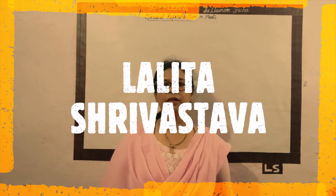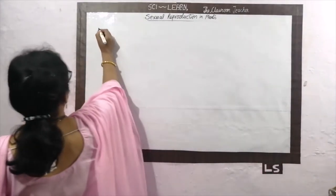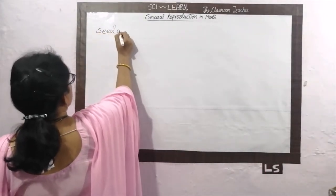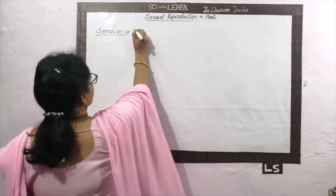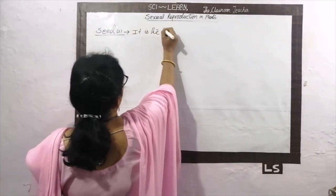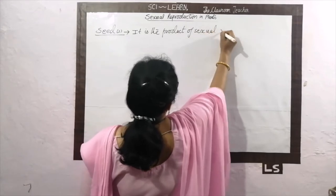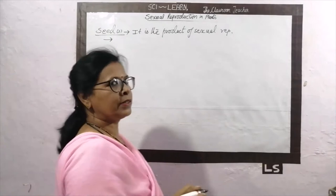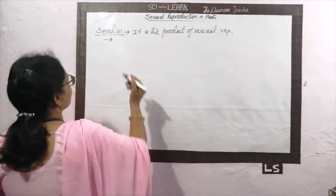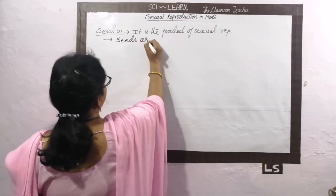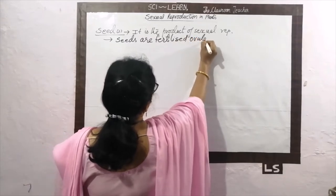Again, Class 12 Biology, the same lesson: sexual reproduction in flowering plants. Today we are going to discuss about seed. What is a seed? A seed is the product of sexual reproduction. Seeds are fertilized ovules — ovules fertilize to form seeds.